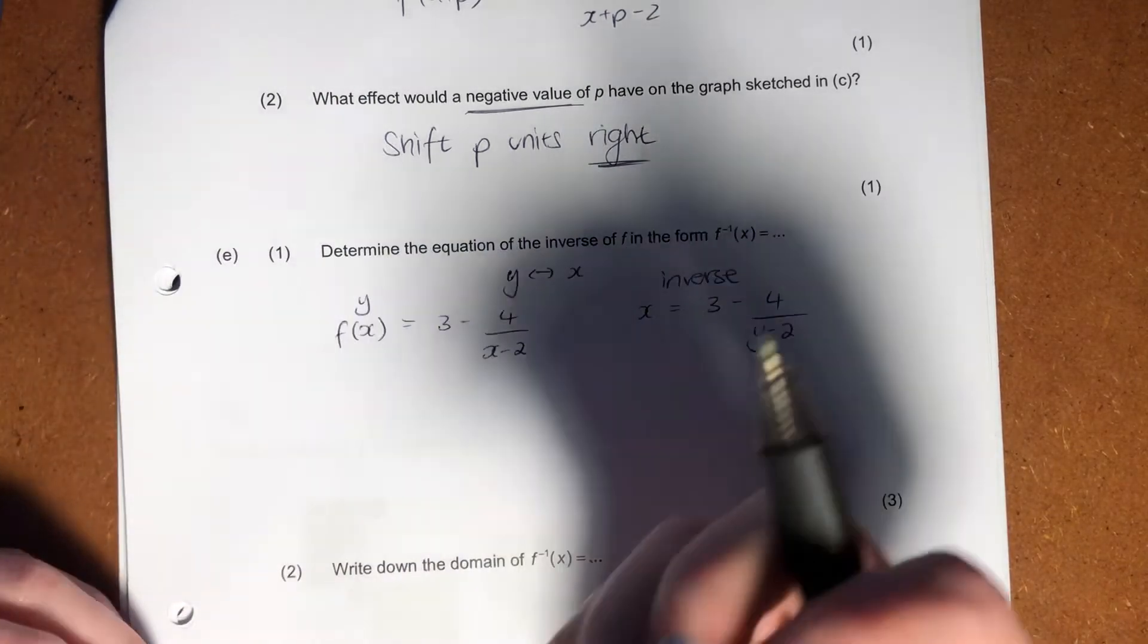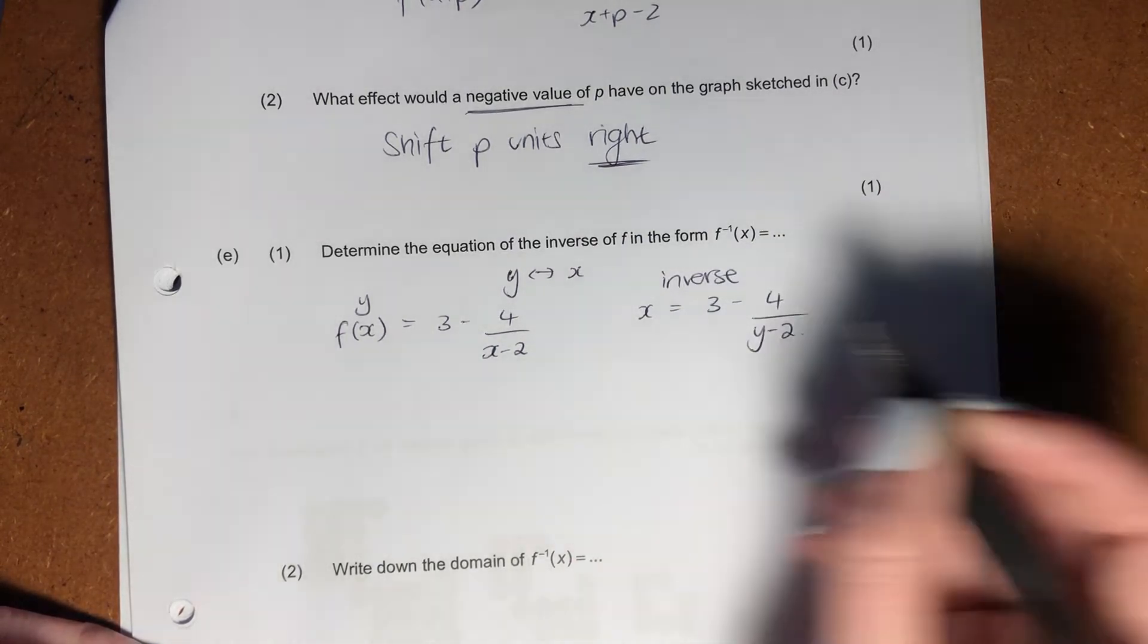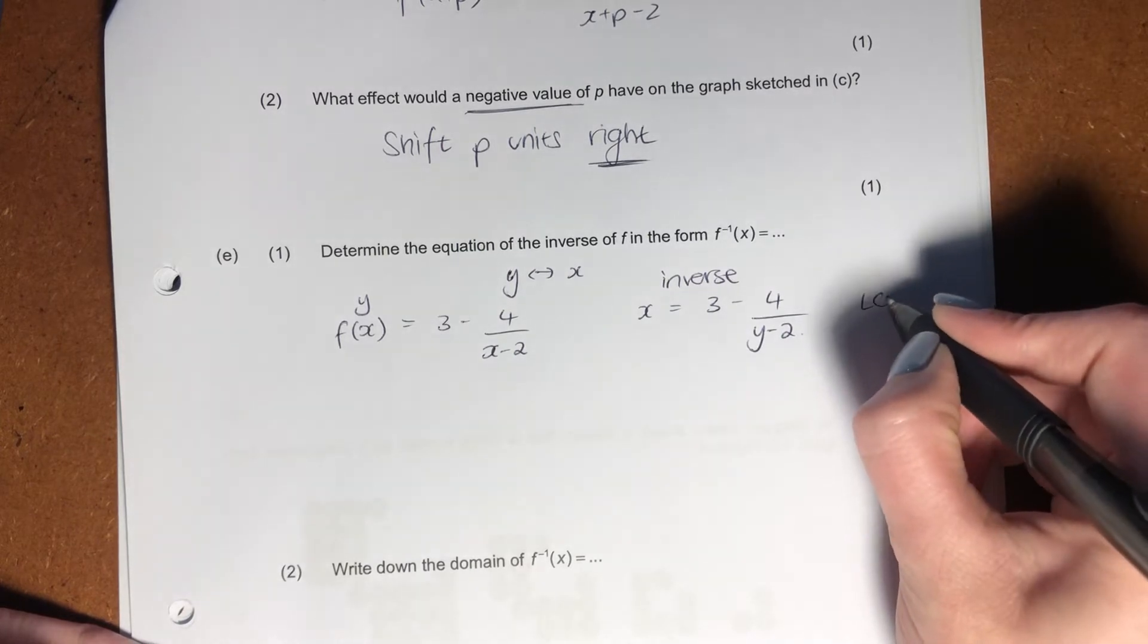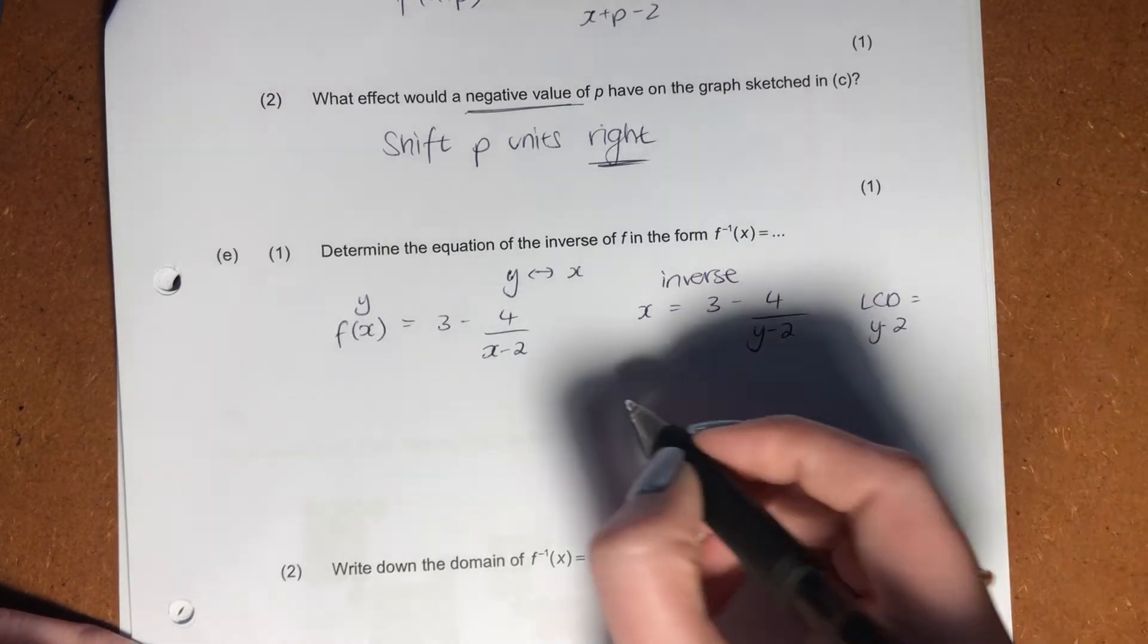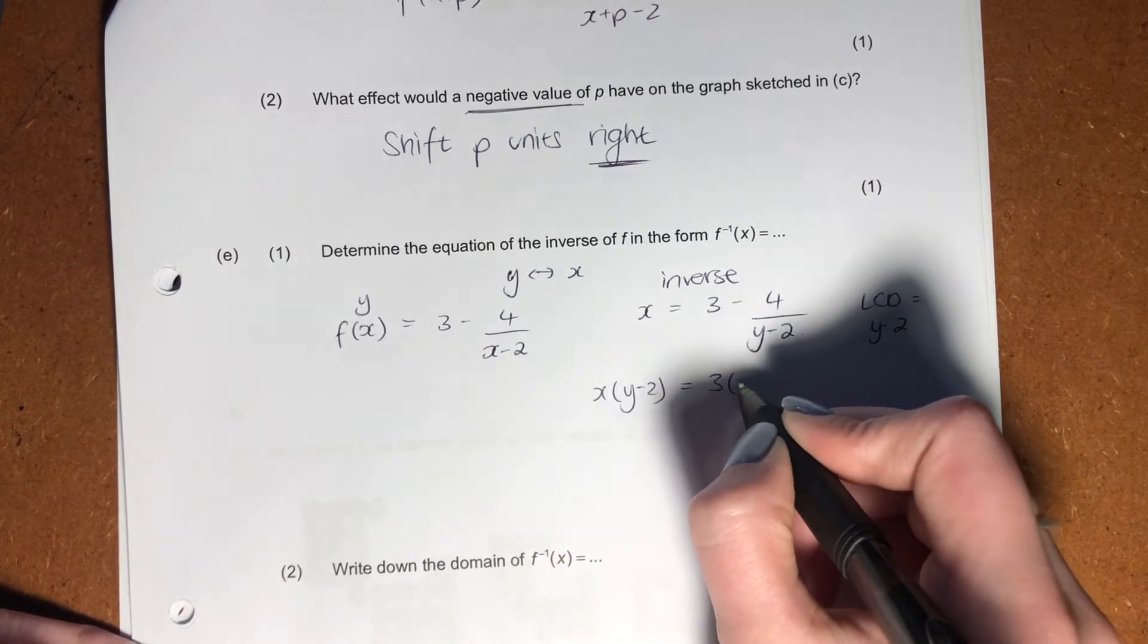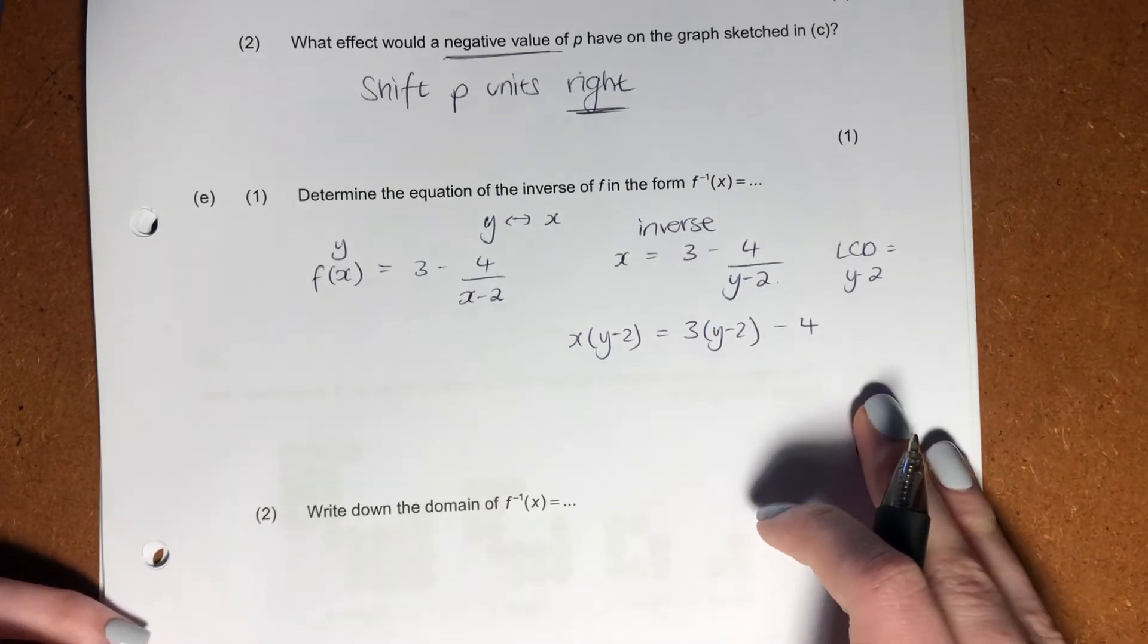My independent variable. So we always want y to be on this side. So we have to now rearrange these a little bit. How do we do that? My LCD is y minus two. So it becomes x times y minus two equals three times y minus two minus four. So I've literally just timed through by my LCD.